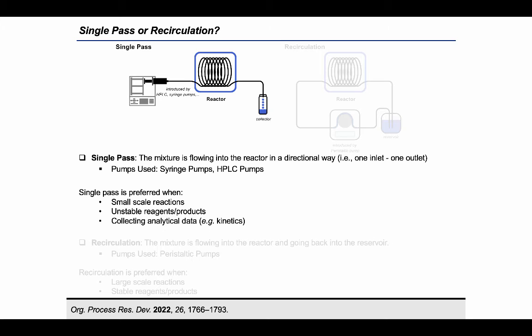Now that all the main parts of a general continuous flow apparatus have been described, the next step would be to define how such a system is running. For chemical applications, there are two main ways to carry out flow reactions. The first one is the so-called single pass flow mode with an end-to-end design where the feeding system and the collection are separated.